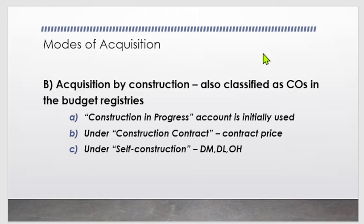Under a construction contract with a third-party contractor, the PPE is recorded at contract price. Under self-construction, the PPE cost comprises direct materials, direct labor, and construction overhead costs. Detailed scenario illustrations can be found on pages 247 and onwards in the textbook.